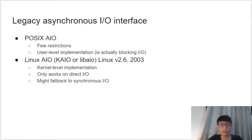POSIX AIO is a user-level implementation that performs non-blocking I/O in multiple threads, giving the illusion that I/O operations are asynchronous. Although performance remains questionable, it is flexible — it works with any file system and on non-buffered file descriptors. On the other hand, Linux AIO is kernel-supported asynchronous I/O where requests are queued in the kernel and offloaded to disk as asynchronous operations. However, if a file uses direct I/O, it might fall back to the synchronous I/O model.